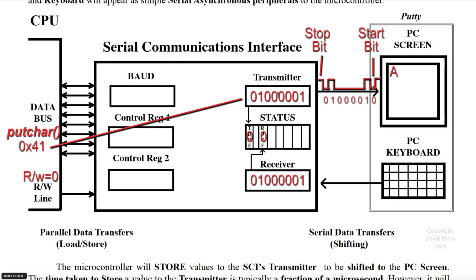Once the stop bit is completely shifted out and we have our capital letter A displayed on the PC screen, the TDRE — or transmitter data register empty — flag will go back to 1, indicating it's now empty and we've been able to take other values from our CPU register.